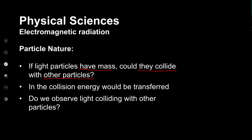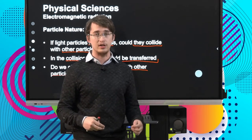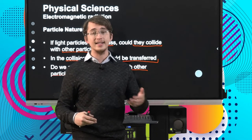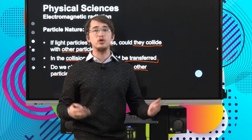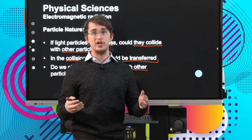If light is a particle and it has mass, doesn't that mean it should collide with objects or other particles as it travels through any particular medium? If we look at the physics of bigger objects like a cannonball or a wrecking ball, we know that collisions definitely involve the transfer of energy — we hear it in the sound the collision makes and we see it in the shape of the object that is collided with. Does this mean that light is able to collide with other particles? It forms the basis of a concept known as the photoelectric effect.